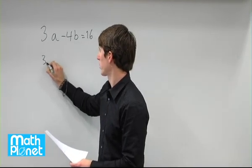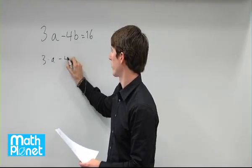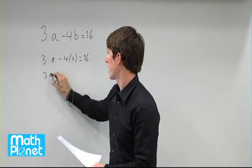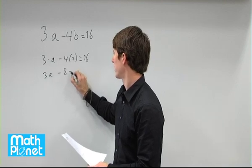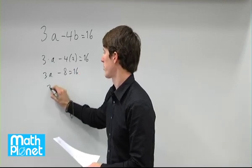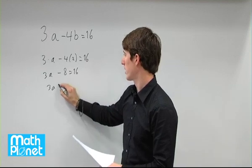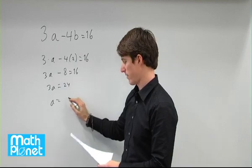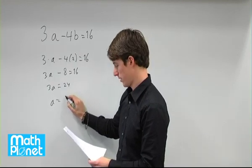So that gives us 3 times a minus 4 times 2 equals 16. Or 3 times a minus 8 equals 16. 3a, if we add 8 to both sides, equals 24. And then a equals 24 divided by 3, which is 8.